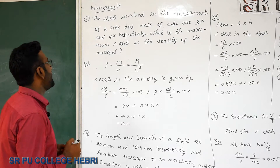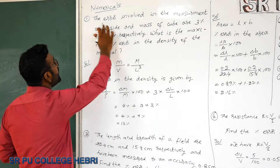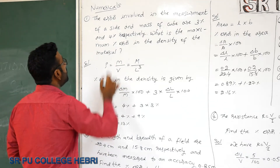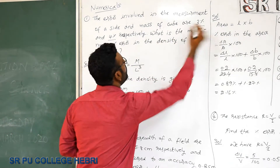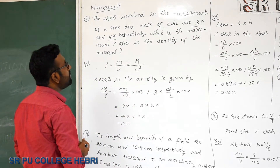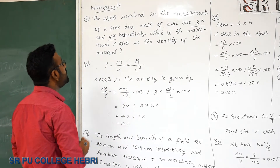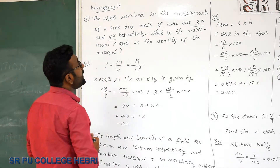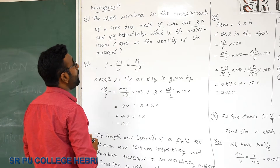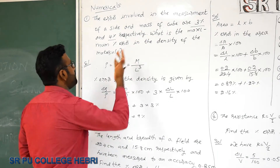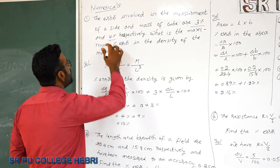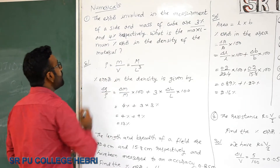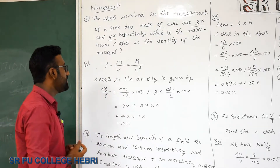We will see the first problem — it is about error. The error involved in the measurement of a side and mass of a cube are 3% and 4% respectively. What is the maximum percentage error in the density of the material? Here we are given the percentage error of the sides as 3% and mass as 4%, and we are asked to find the percentage error in the density.